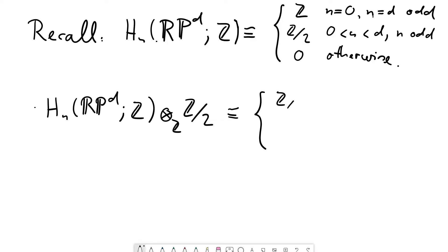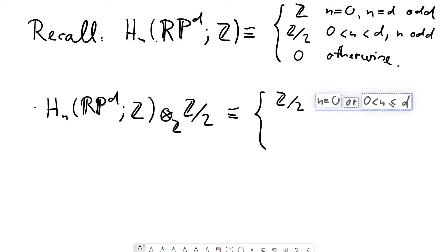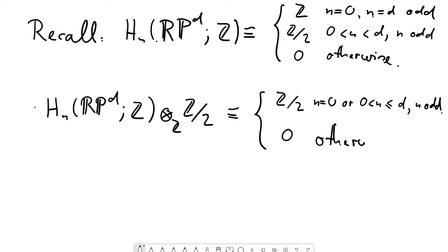In other words, we only get Z/2 as the non-zero output. This occurs when n is 0 or in degrees where we originally had a Z/2 term, i.e., 0 < n < d with n odd. If d is odd, we can also get a Z/2 term for n = d. So the condition is 0 ≤ n ≤ d with n odd (including n = d when d is odd), and 0 otherwise.